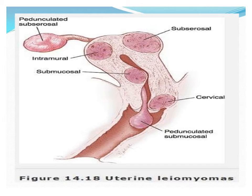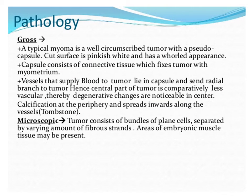The pedunculated submucosal fibroid is attached with the help of a peduncle to the endometrial surface. This type of fibroid, if attached to the fundus, can cause inversion of the uterus — the inside of the uterus can come out, which is called inversion.